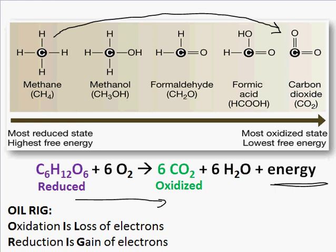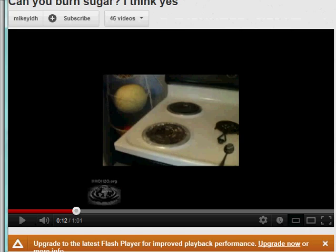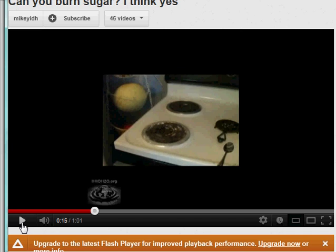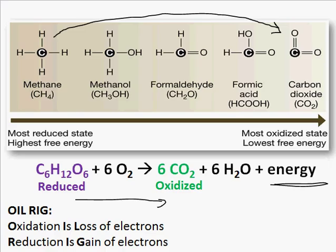Sugar will burn in the presence of oxygen. Watch what happens — sugar thrown on a burner creates a flame with lots of heat, so sugar has lots of energy. That was all in one step and the energy was all released at once, but that's too hot. What we need is several steps to slowly extract the energy, and that's what happens during glycolysis and the Krebs cycle.